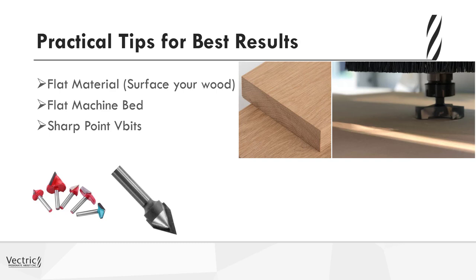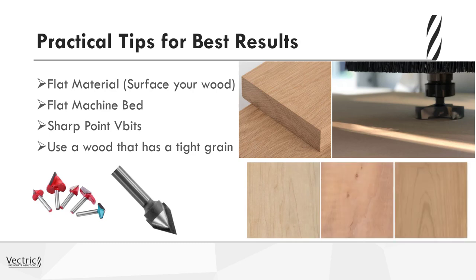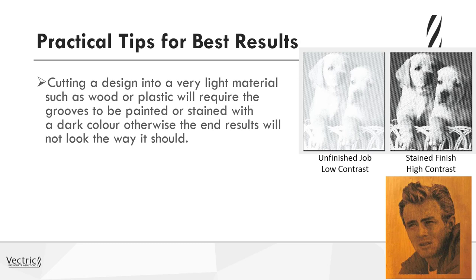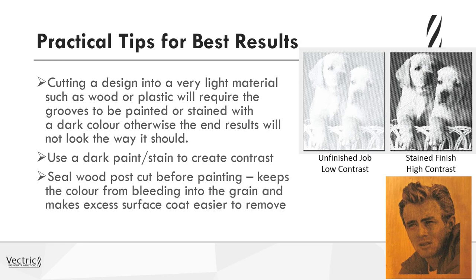You want to use a wood that does not have a strong grain, as strong grain can mar the final results and make it hard to see the carved detail. Tighter grains provide much better results. Preparing and finishing a photo v-carve design is critical — a high degree of contrast between the material surface and the machined grooves is essential. Cutting into a very light material like wood or plastic will require the grooves to be painted or stained with a dark color, using a dark paint or stain to create that contrast.